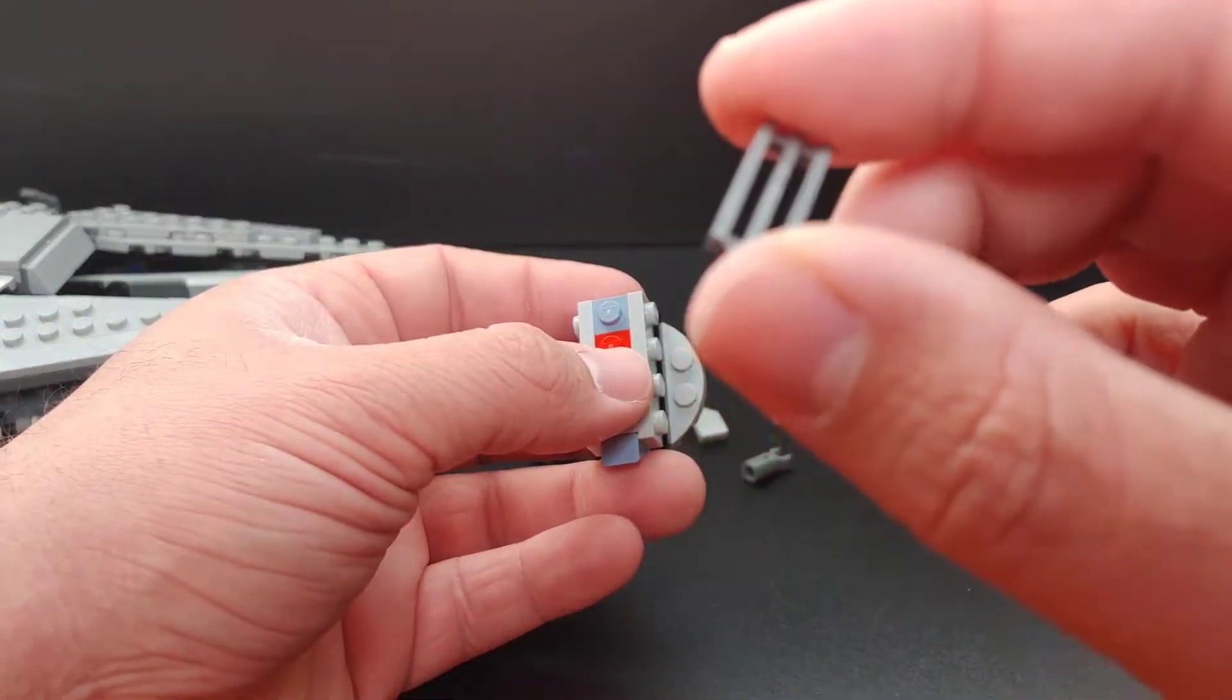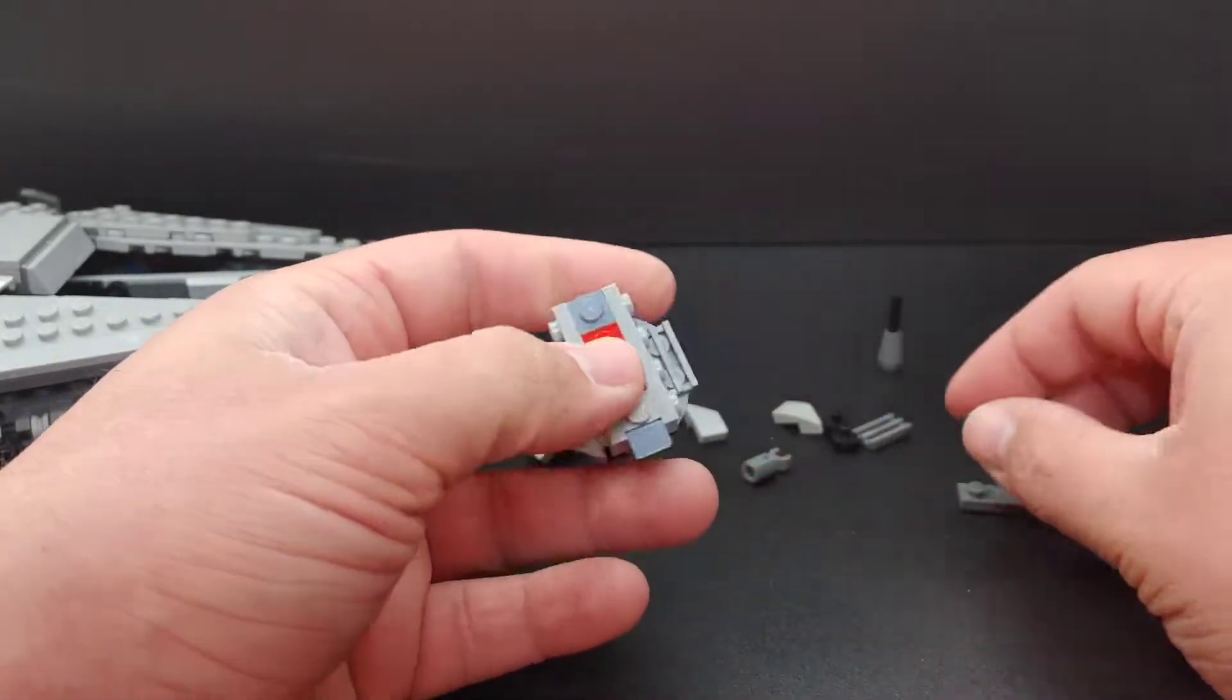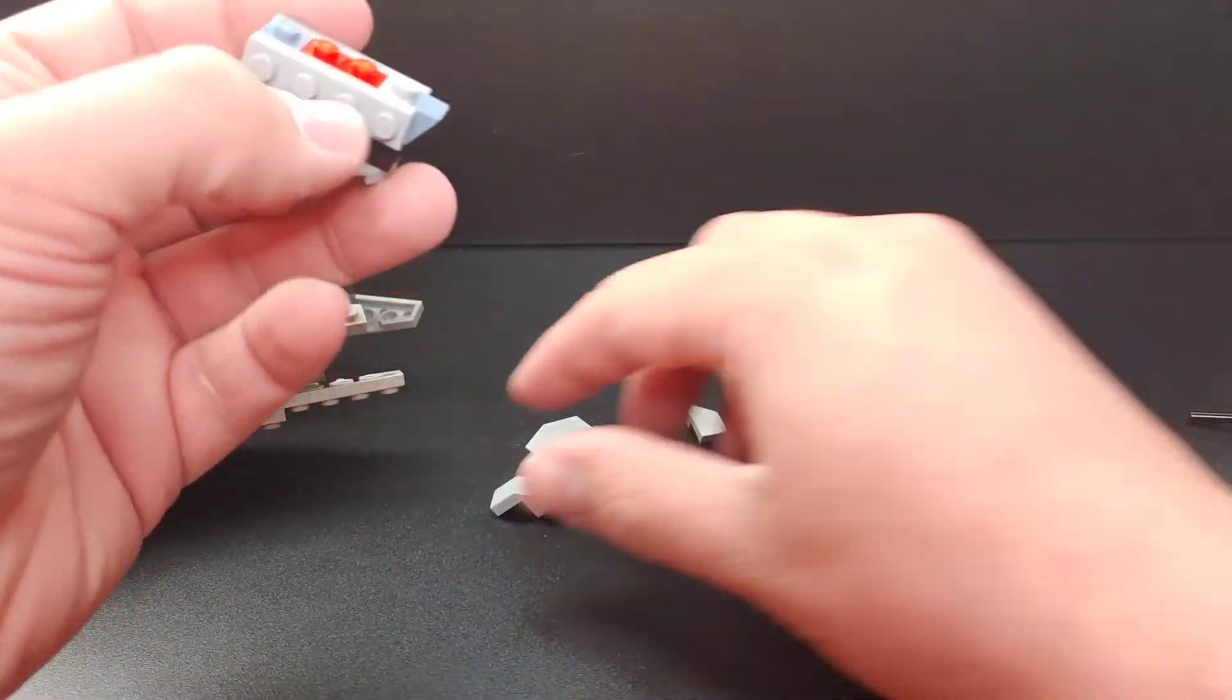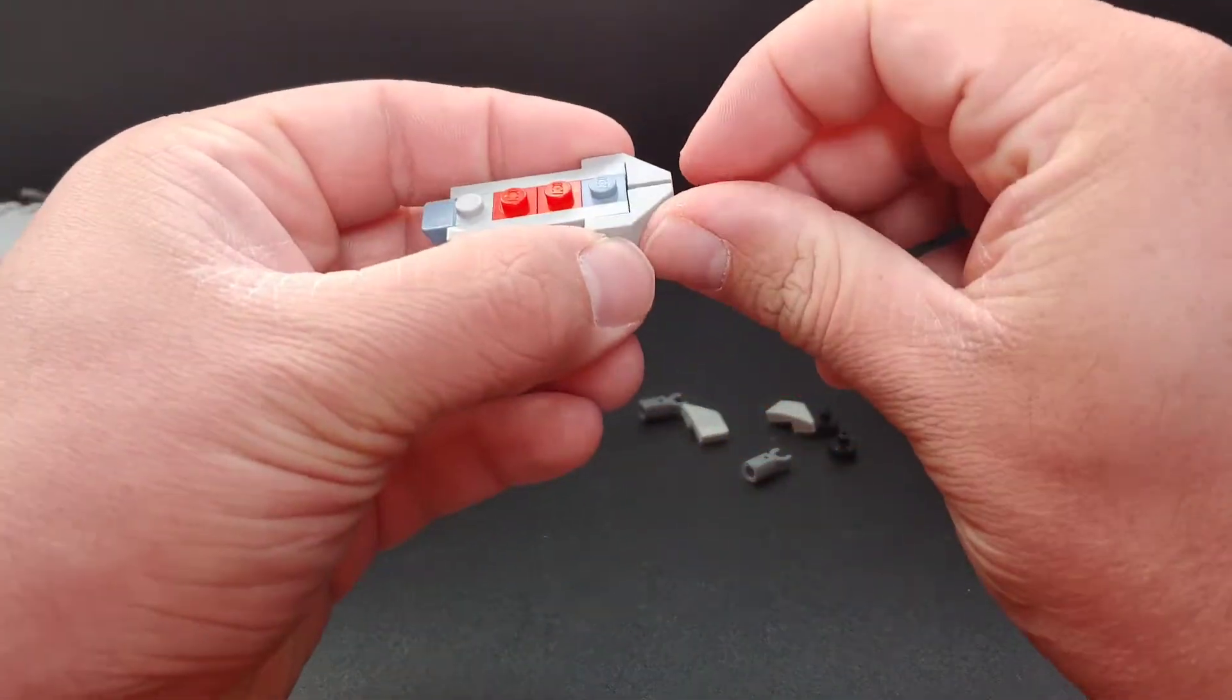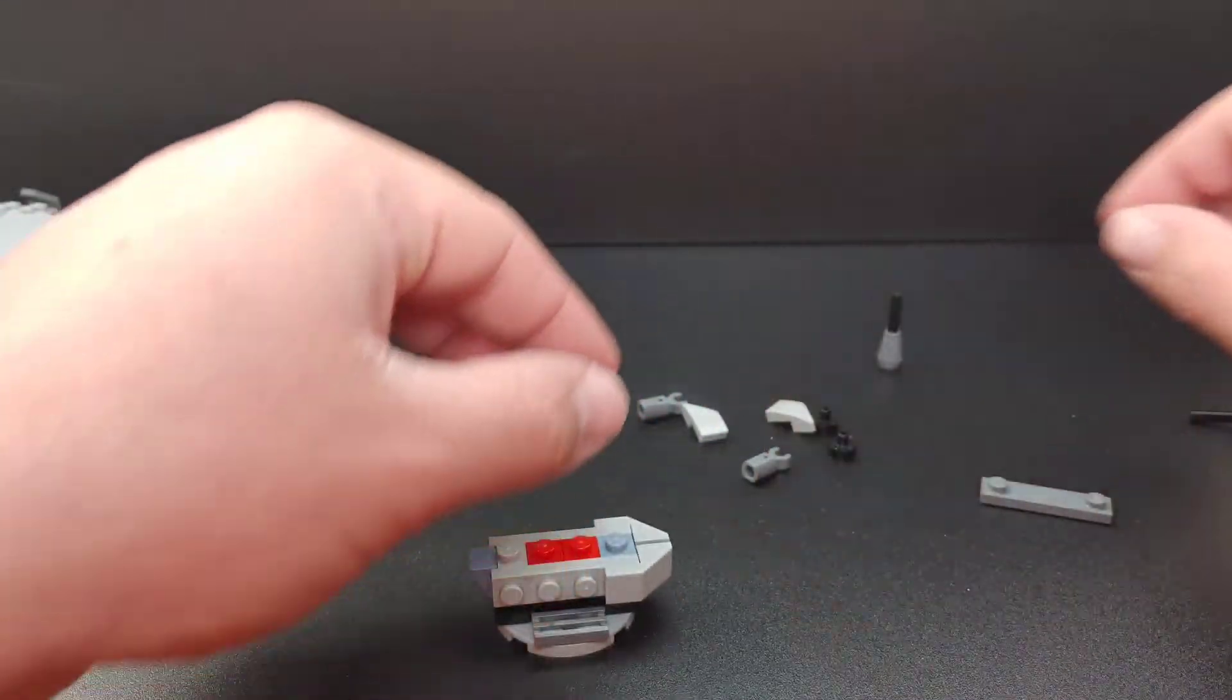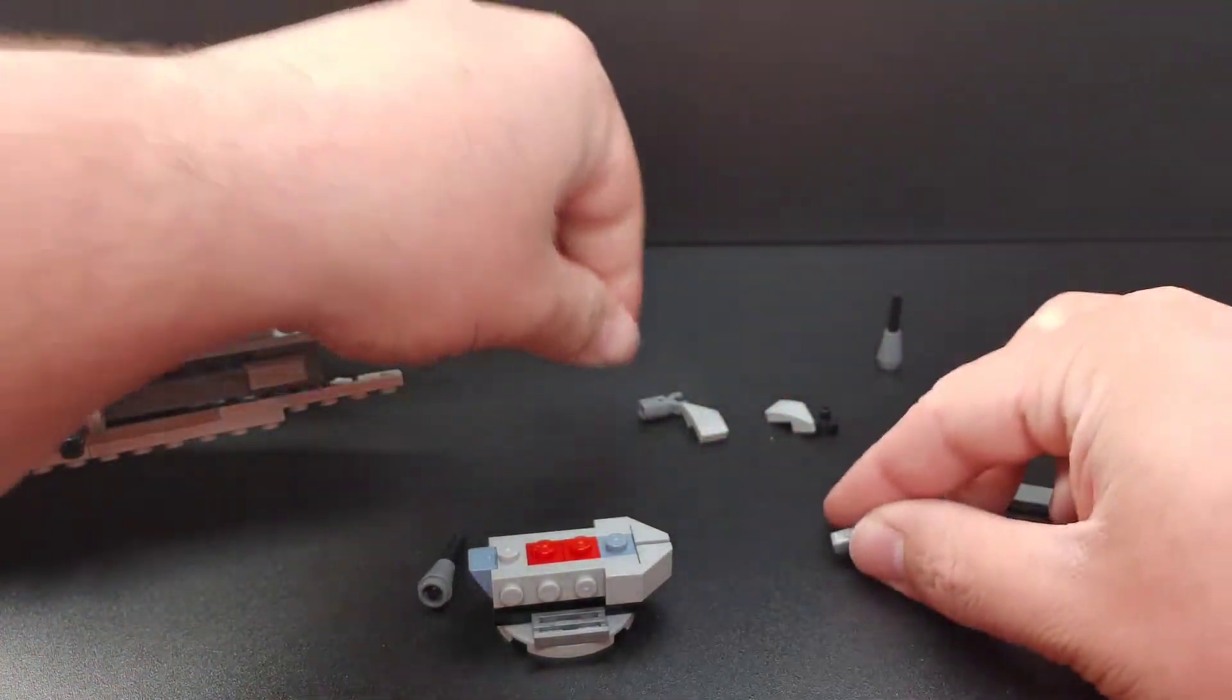Okay, and now we will take two by one by four plates, throw on the sides, and quickly run these grill pieces, the shiny silver pieces. We'll throw those on there just to cover up those studs, pretty simple. Then those pieces, those big cheese slopes, I don't know what you'd call them exactly, those go there in the back.